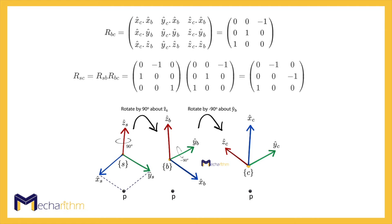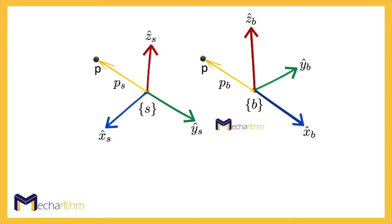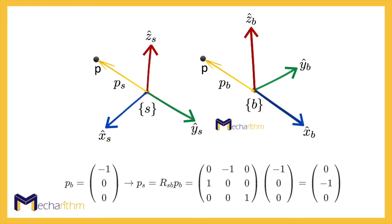By pre-multiplying RBC by RSB, we change the representation of the C frame from the B frame to the S frame. Note that the subscript cancellation rule says that the second frame of the first subscript should be the same as the first frame of the second subscript — in this case, both are B. A rotation matrix can also serve as an operator to change the frame of reference for a vector. For instance, suppose that we have PB that represents the position of the point P expressed in B frame coordinates. We want to express P in S coordinates, which we can do by pre-multiplying PB by the rotation operator RSB to get the point coordinates in the S frame. Note that the subscript cancellation rule works here too.